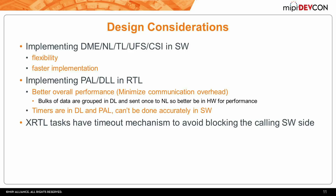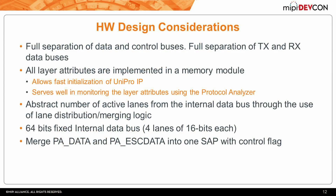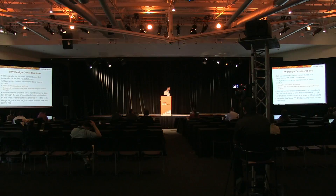The functions implemented in XRTL or in the transactors have a timeout mechanism to avoid blocking the calling software. As for the hardware design, we made full separation between the data and control paths, and full separation between the TX and RX data buses. The attributes of all layers are implemented in a memory-like module so we can easily access them for debugging and for initializing the whole protocol. The internal bus is implemented in 64-bit fixed width regardless of the number of planes to ease internal implementation. We also merged the PA data set and the PA escape data set into one with a control flag to differentiate between them.